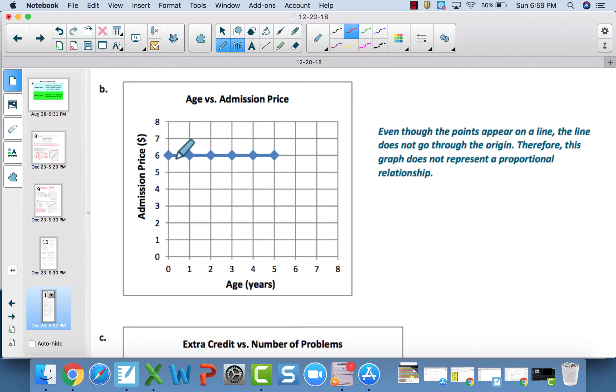For B, although this is a straight line, it does not touch the origin or go through the origin. Therefore, this does not represent a proportional relationship.